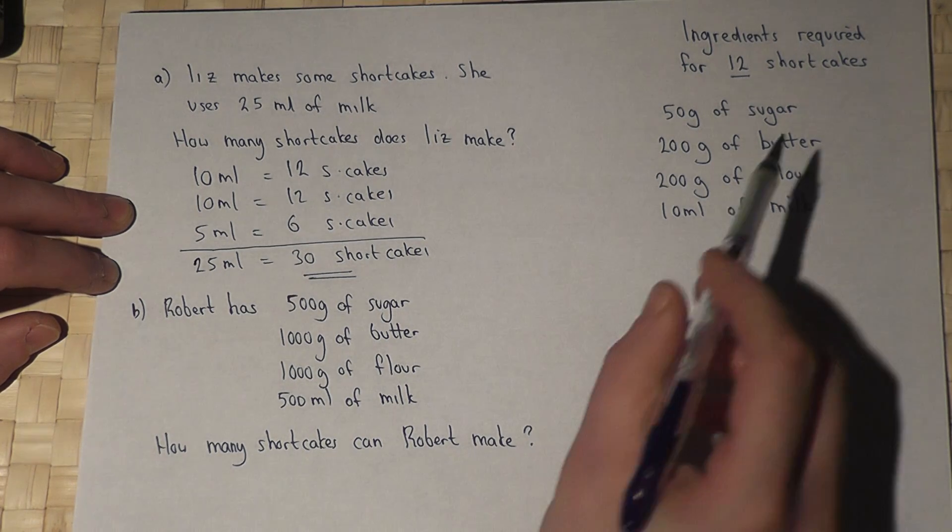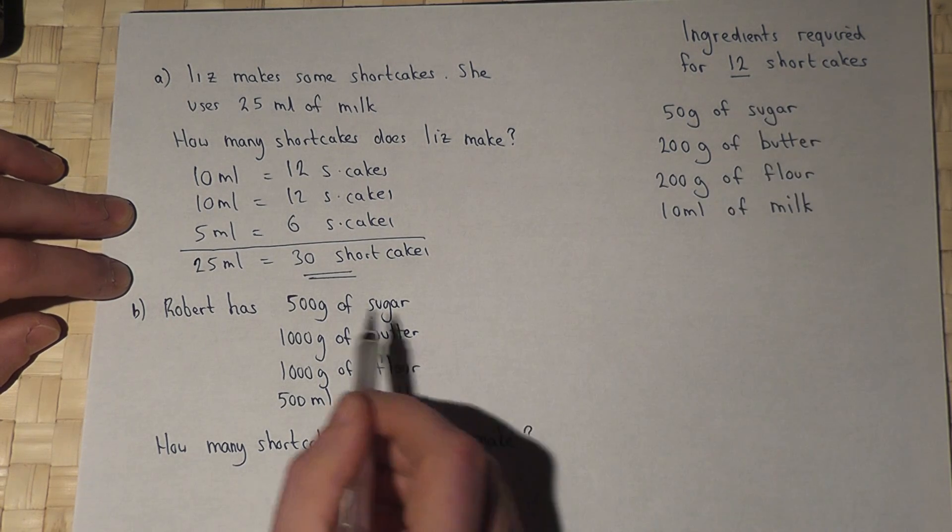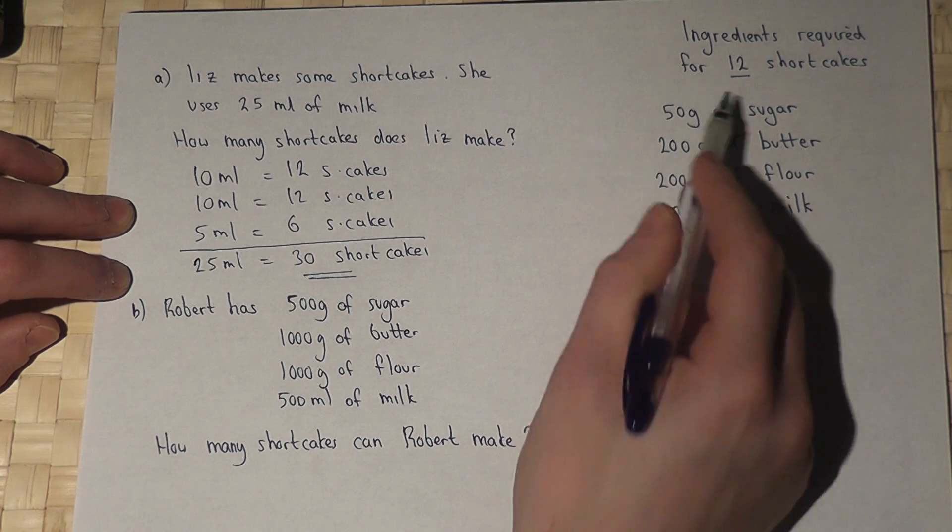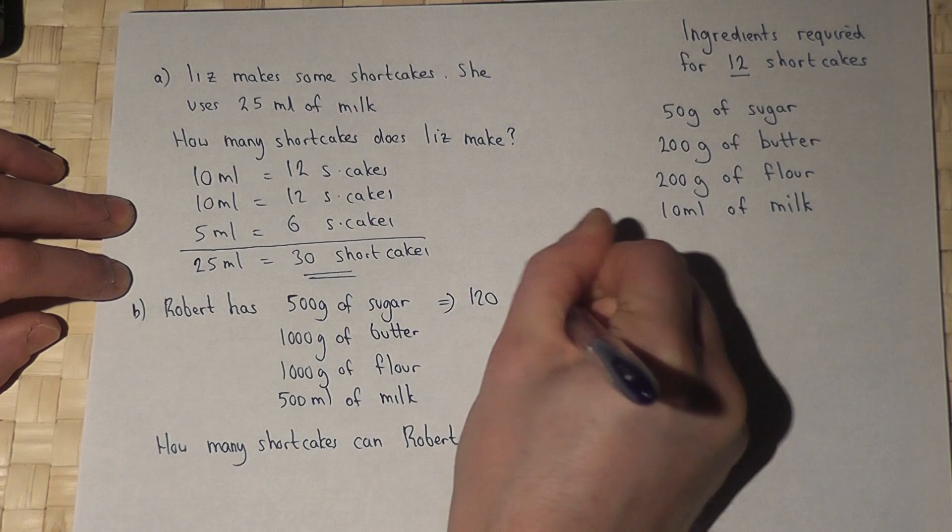Now then, if we know that 50 grams of sugar makes 12 shortcakes, then if you've got 500 grams, then you could, in theory, make 10 lots of 12, which is 120 shortcakes, in theory.